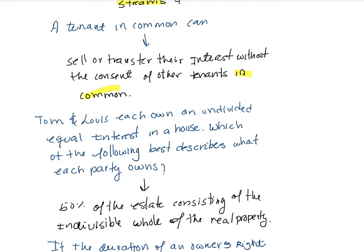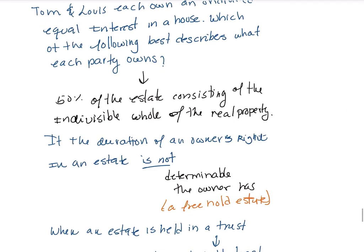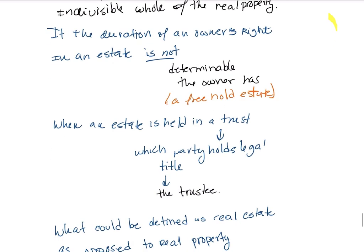Tom and Louise each own an undivided equal interest in a home. The best description of what each party owns is a 50/50 share of the estate, representing the individual ownership interest and value.